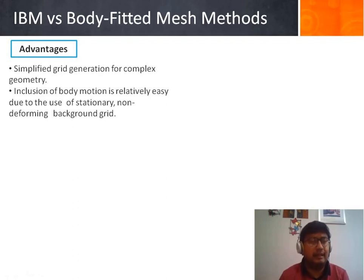It has certain advantages over the body fitted mesh methods such as the grid generation is very simple in case of IBM even for very complex geometries. Also, inclusion of body motion is relatively easy due to the use of stationary Eulerian background mesh.